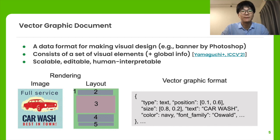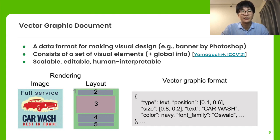We are going to explain further details. First, let us briefly describe a definition of a vector graphic document. It is a data format commonly used for making visual designs, such as creating a banner in Photoshop. As shown at the bottom, the document consists of a set of visual elements, where each element has various properties such as images, texts, layers, and fine-grained styling attributes.